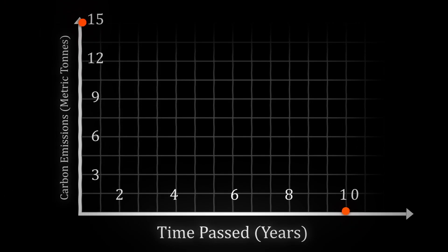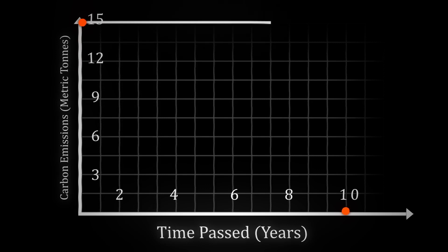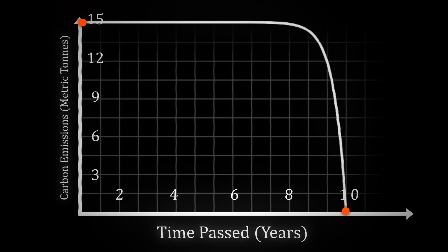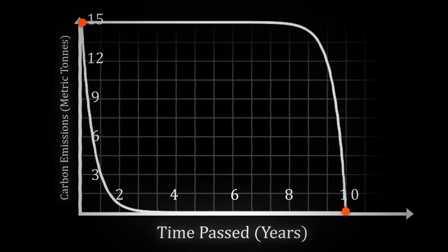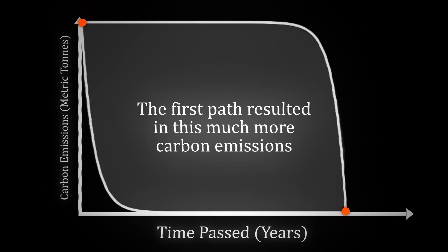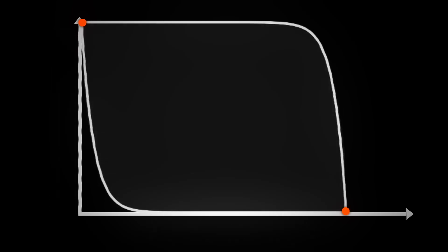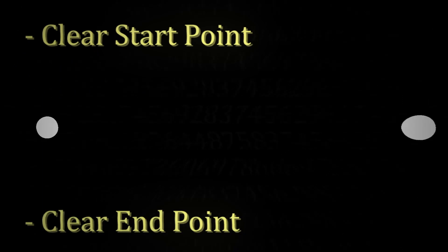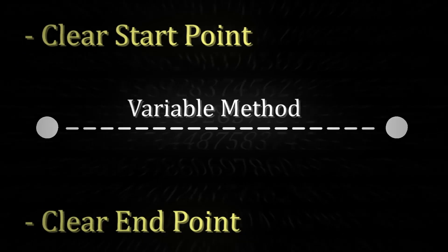There are multiple ways we can descend from this value to this value. We could have a clean linear descent or a much bumpier ride. Perhaps the government chose to not really change these first couple of years, though under pressure from the public, they push emissions down drastically at the last minute. Or they could have made an immediate rush to action, yet slowed down later on. The problem is that these two methods result in different outcomes — the first method emitted much more carbon dioxide than the second. Despite setting a clear start and end point, the emissions end up being drastically different.